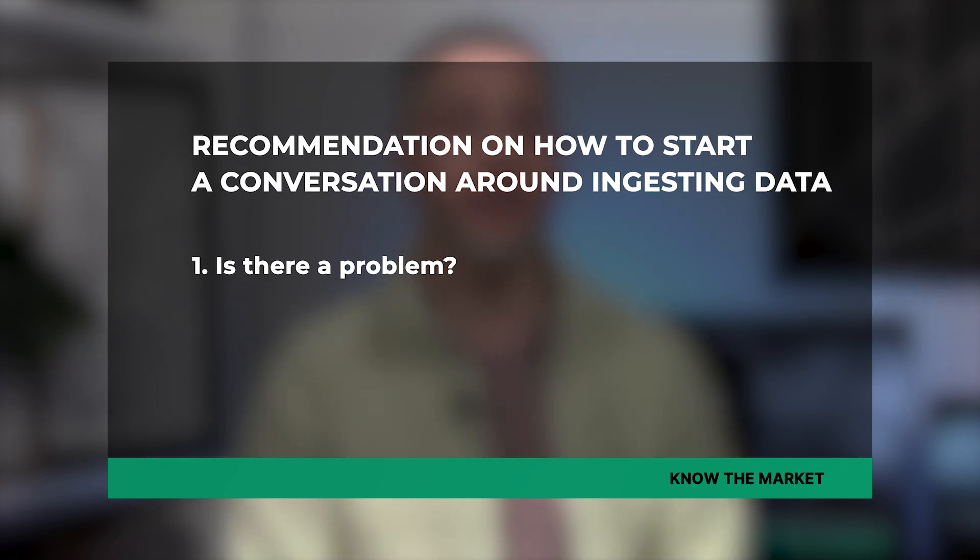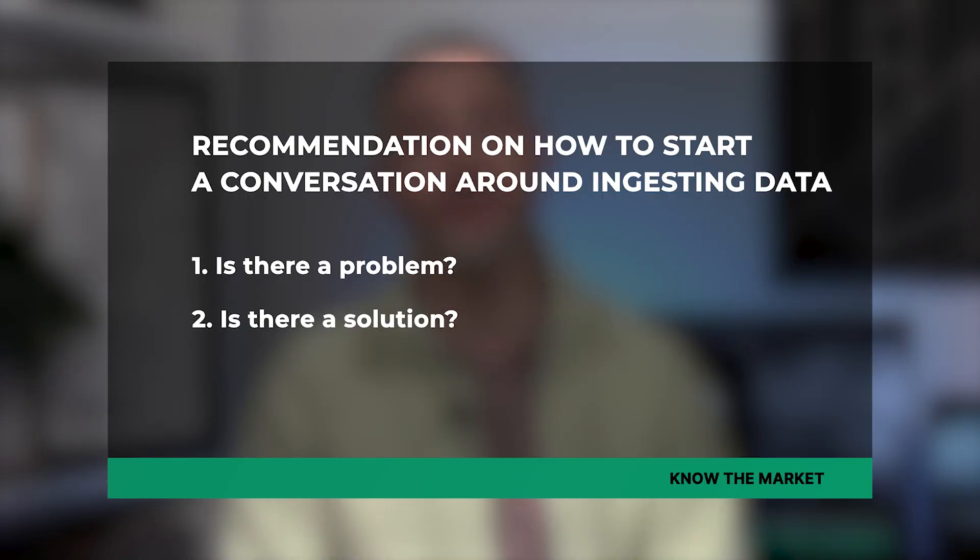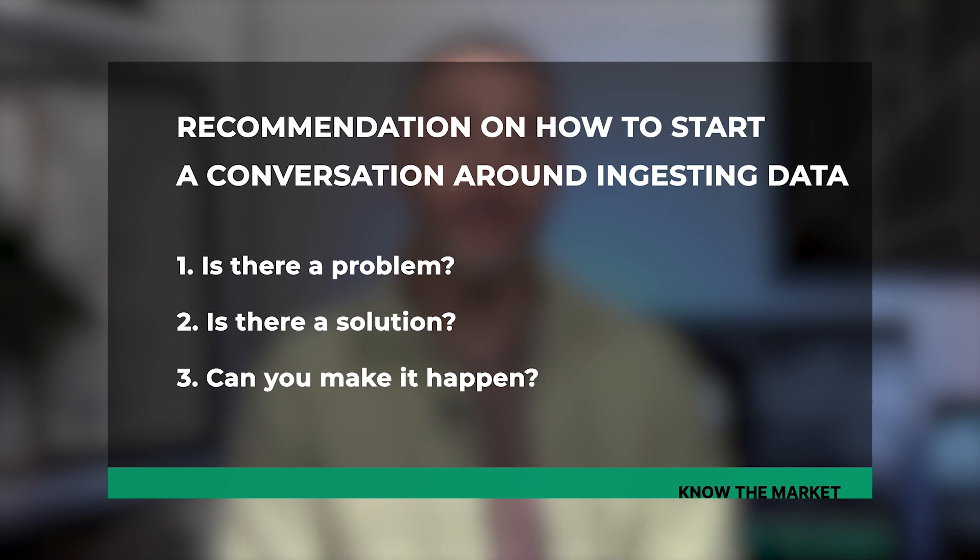As a close to this video, I wanted to provide you with a quick recommendation on how to start a conversation around ingesting data. Number one: is there a problem? Ask yourself if your CRM has a bad data problem and consider whether a lack of good industry data is negatively affecting your business. Number two: is there a solution? Find out if there is a proven vendor with reliable market data that can help you establish an integrated data pipeline into your target system. And number three: can you make it happen? Prioritize your company's ability to justify budget and internal resources dedicated to solving your bad data problem once and for all. Easy peasy, right? That's all for today. Ciao for now.